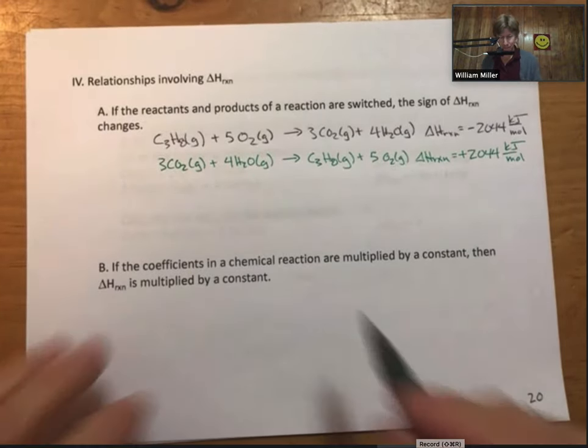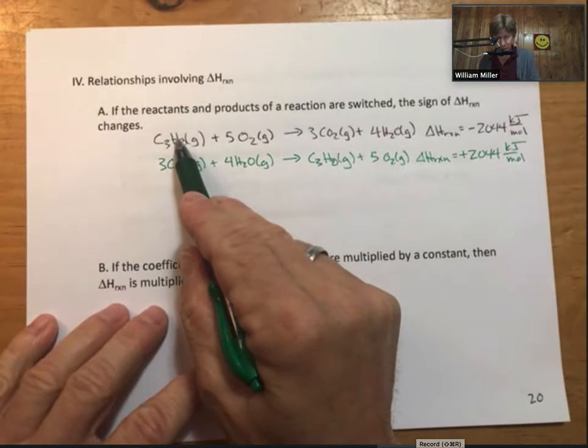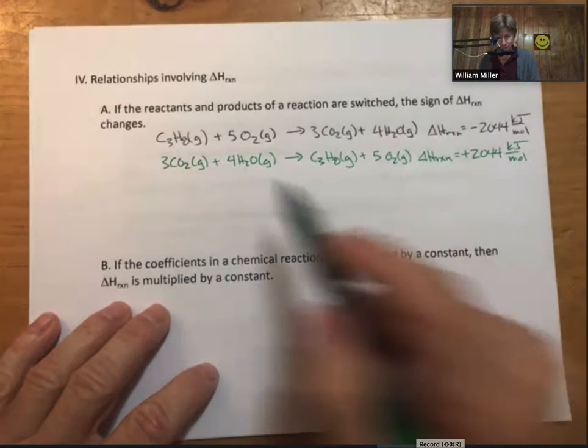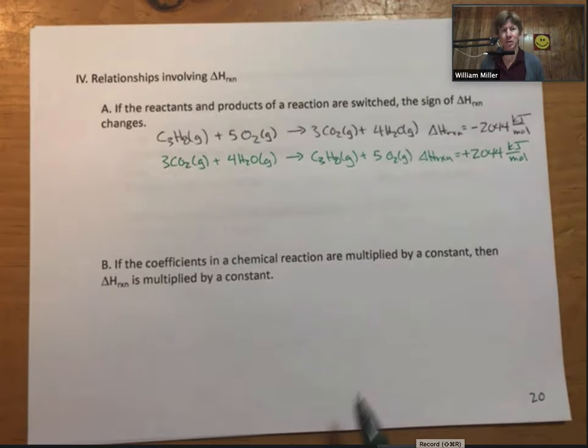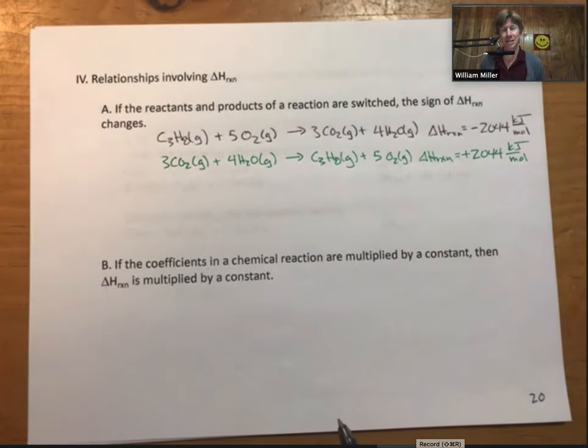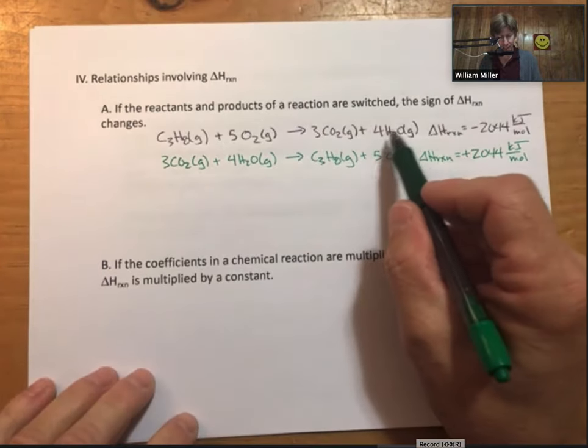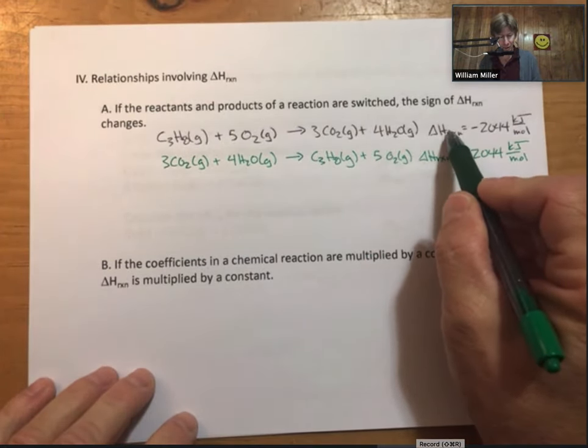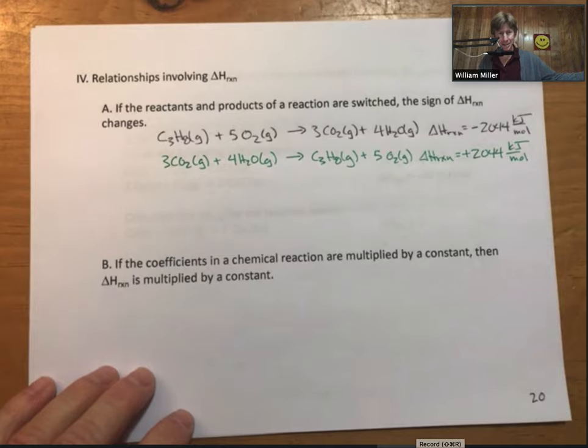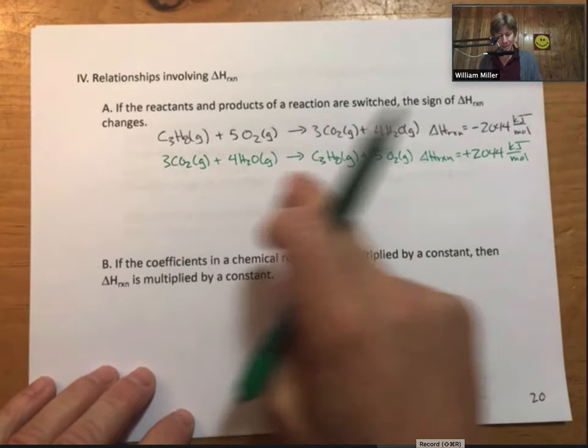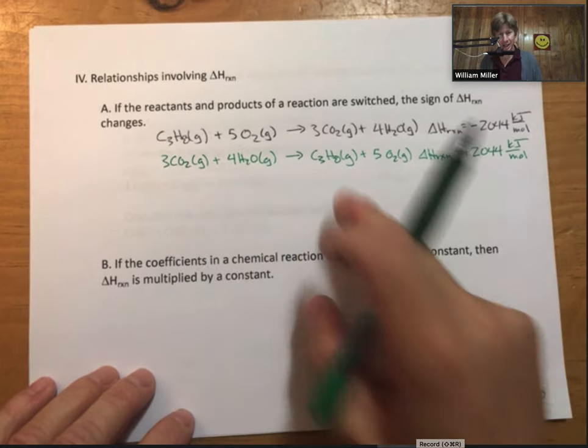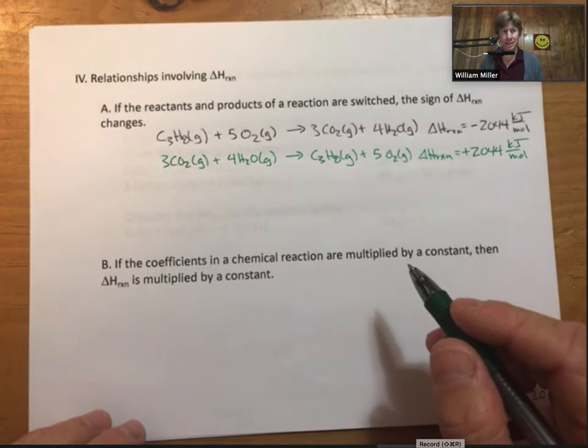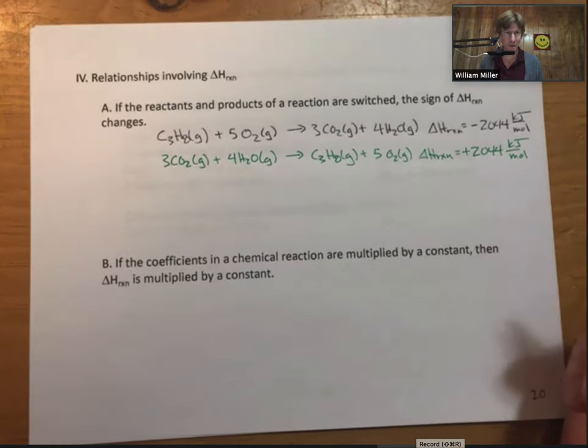What that means is that as we go on the top reaction from propane and oxygen to carbon dioxide and H2O, that that process releases energy and that energy goes from the reaction to the surroundings. If we then do the opposite process, then in order for the reaction to occur, the process must take in energy.